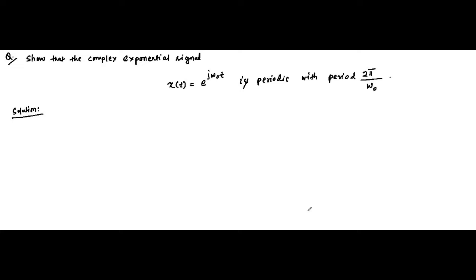Here the question is that we have a complex exponential signal given by X(t) = e^(jω₀t). And we have to prove — we have to show — that it is periodic with the fundamental period equal to 2π/ω₀.